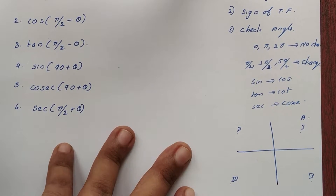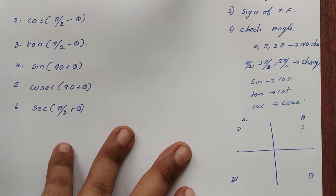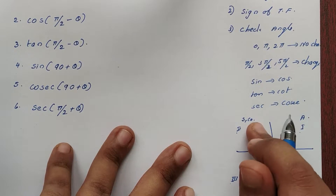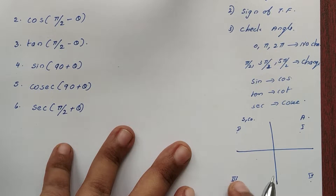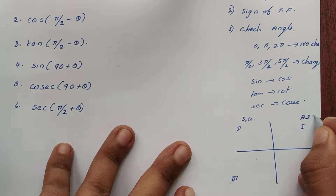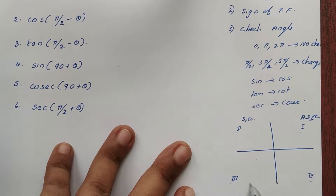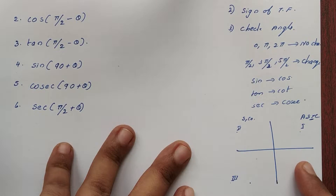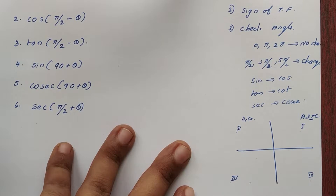In the first quadrant, all trigonometric functions are positive. In the second quadrant, sin and its reciprocal are positive; the others are negative. In the third quadrant, tan and its reciprocal are positive; all other ratios are negative. In the fourth quadrant, cos and its reciprocal are positive; all other ratios are negative.